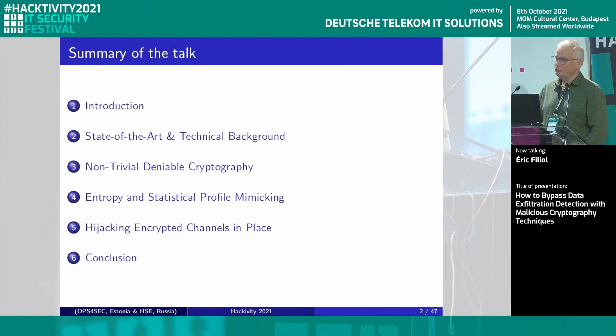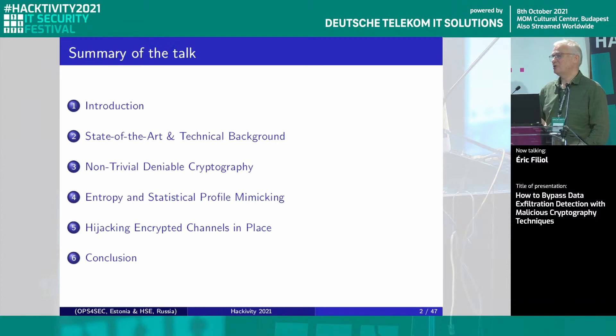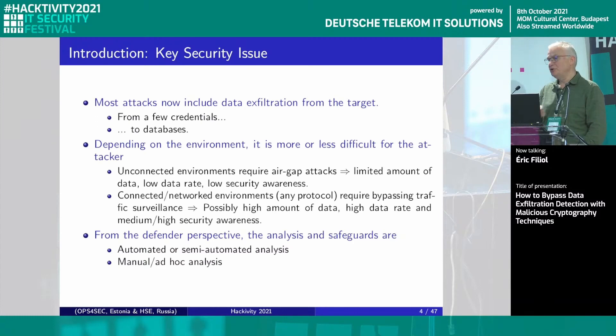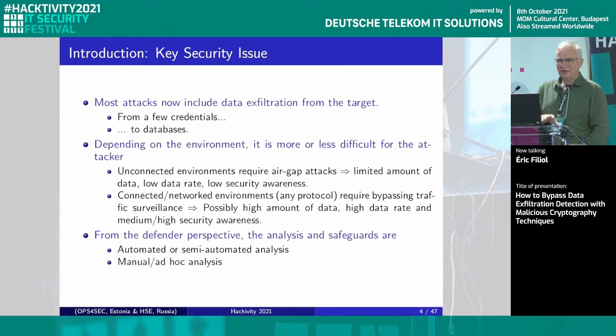This is what I call non-trivial deniable cryptography. Then I will explain how to modify or mimic any kind of innocent logging entropy and statistical profile to evade any form of existing detection. If time permits, I will present how to evade data in a special case where the attacker cannot control the IPSec tunnel but can still make data evade. The key security issue: you have an internal system, and most attacks now exfiltrate data — it could be only a few bytes of credentials up to a huge database.